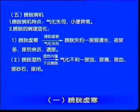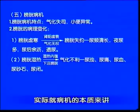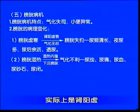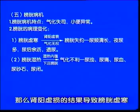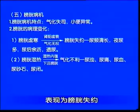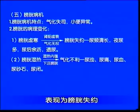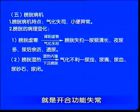将来同学们在学《伤寒论》的时候会进一步理解大肠热结腹气不通，学到《伤寒论》的阳明篇阳明腑实证就会进一步加深理解。接下来讲膀胱，膀胱的生理功能就是气化功能，是二便的开合，所以膀胱的病理特点是膀胱气化失施，小便异常。第一叫膀胱虚寒，实际就病机的本质来讲是肾阳虚，肾阳虚导致膀胱虚寒，使膀胱的气化无权，表现为膀胱失约，就是开合功能失常，开的多合的少就失约。